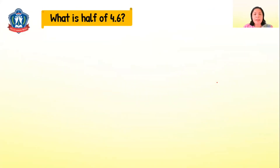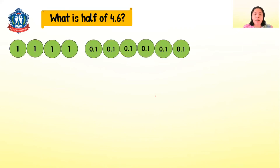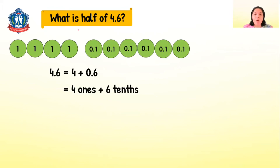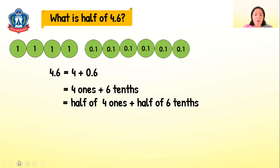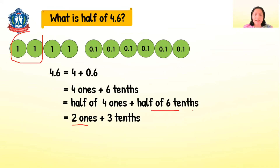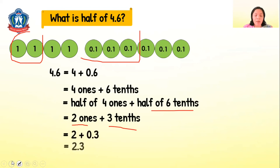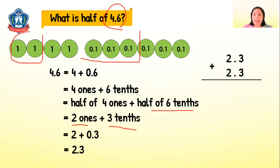Now let's study finding the half. What is half of 4.6? 4.6 is 4 ones and 6 tenths. Half of 4 ones is 2 ones, and half of 6 tenths is 3 tenths. So 2 ones plus 3 tenths is 2.3. Let's check: 2.3 plus 2.3 — 3 tenths plus 3 tenths is 6 tenths, and 2 plus 2 is 4. That gives 4.6, so our answer is correct.